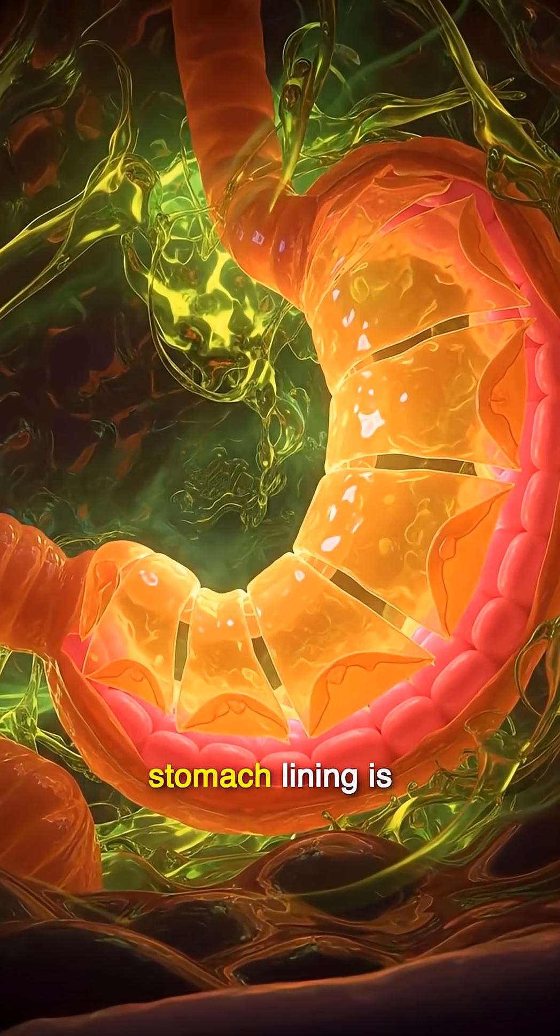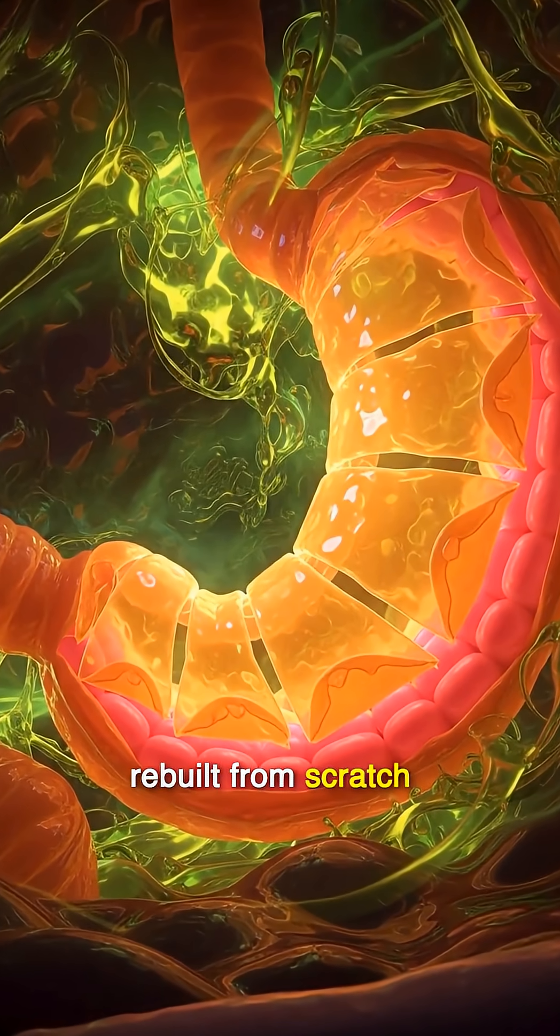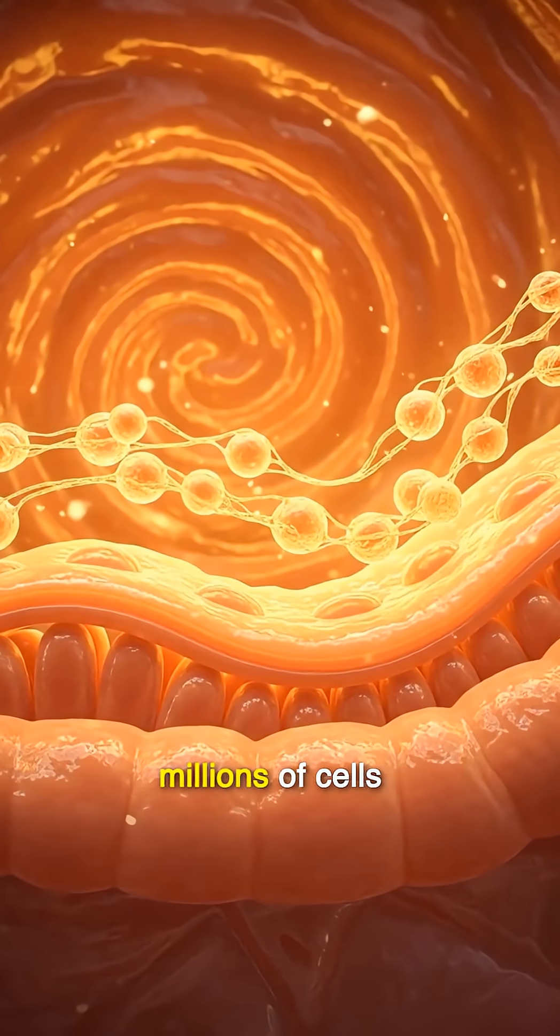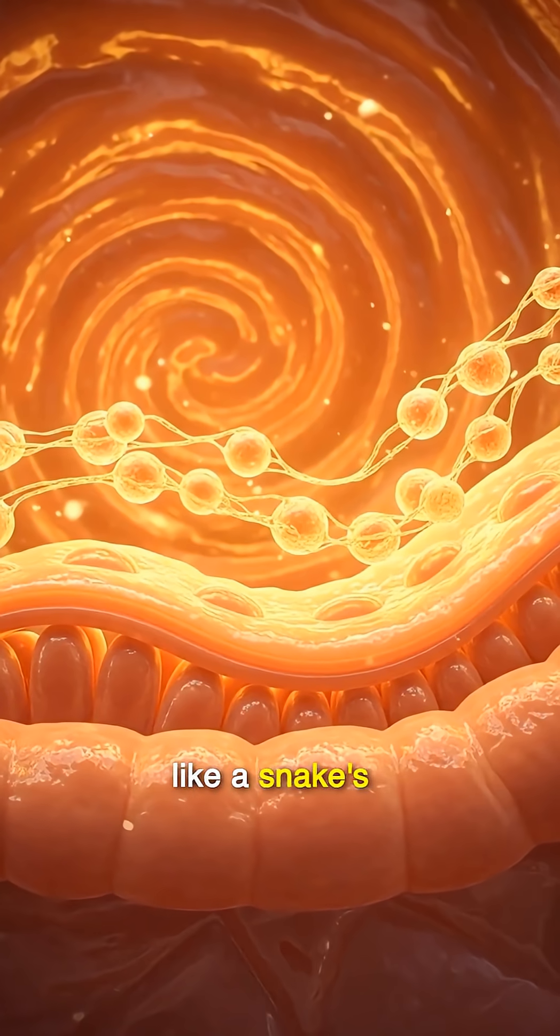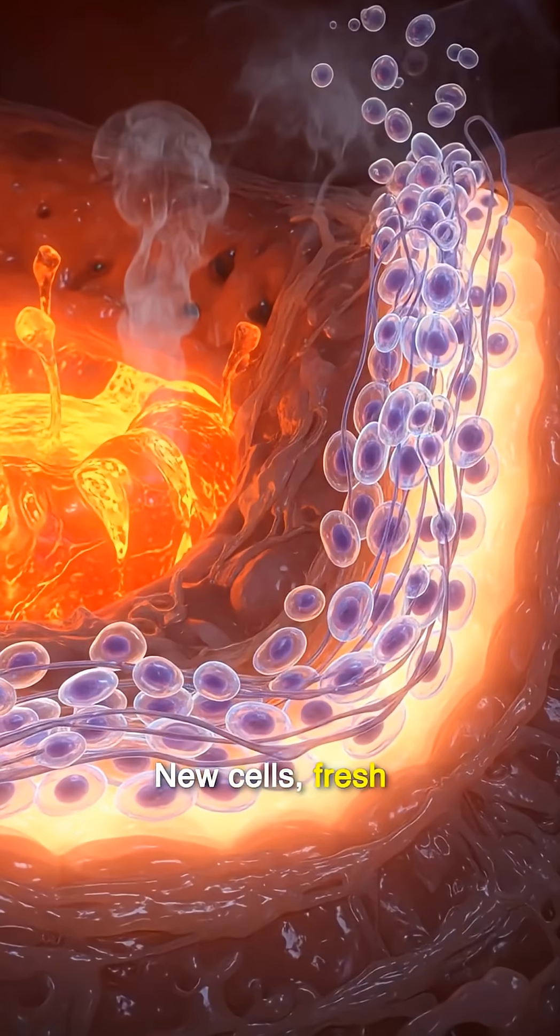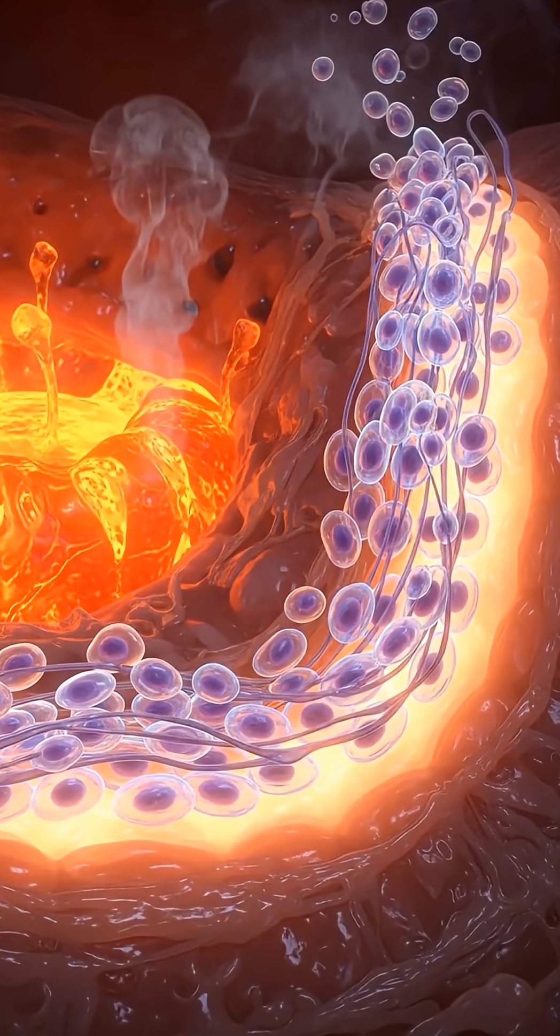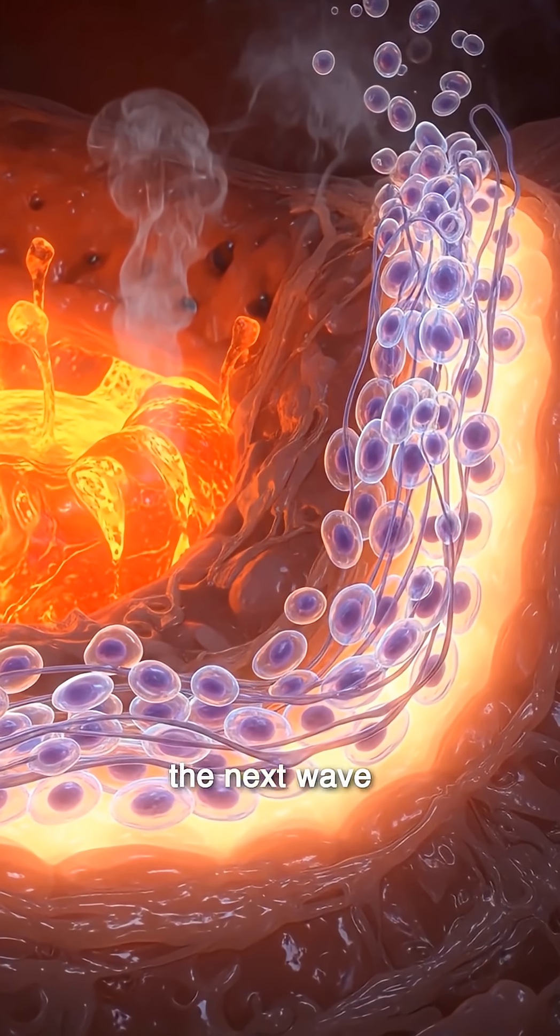Every two to four days, the stomach lining is torn away and rebuilt from scratch. Visualize a time-lapse: millions of cells peel off, discarded like a snake's old skin. New cells, fresh and unscarred, surge to the surface, forming a barrier ready to face the next wave of acid.